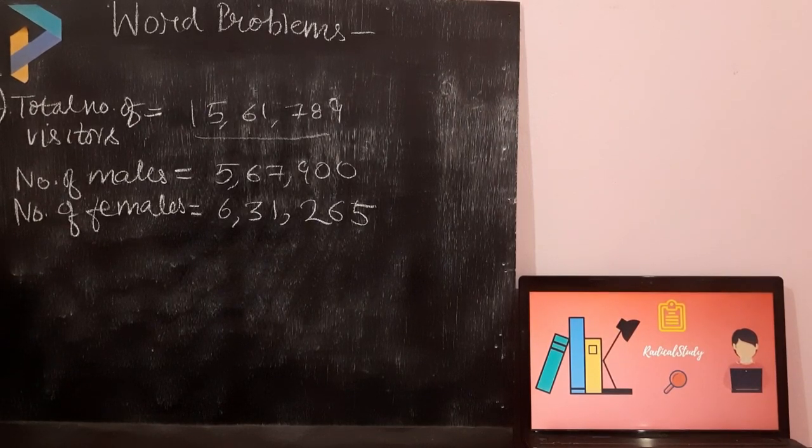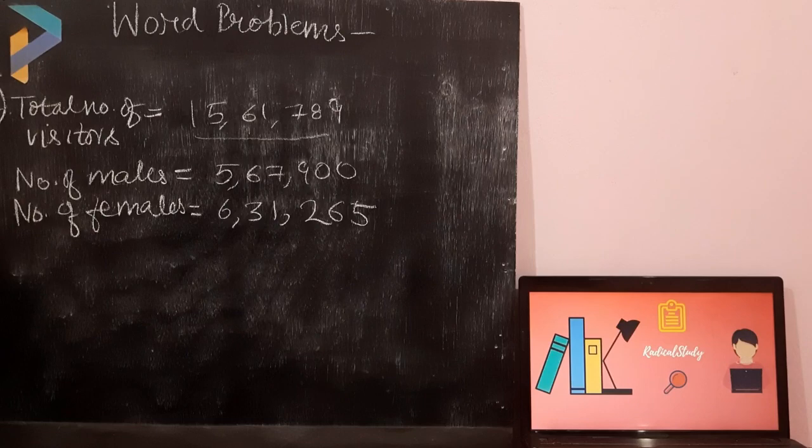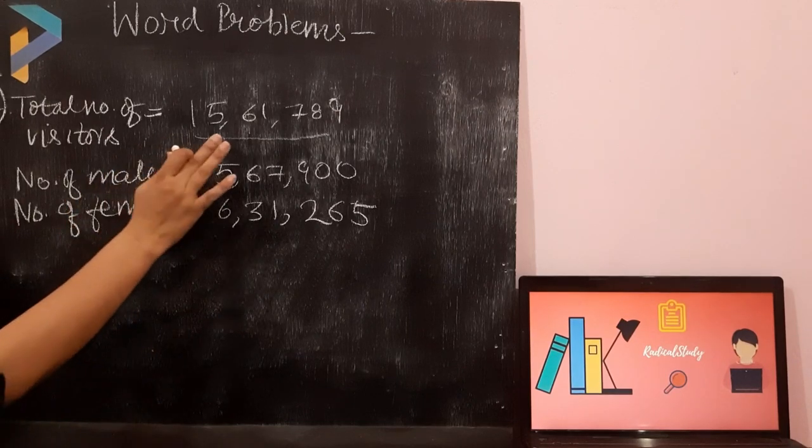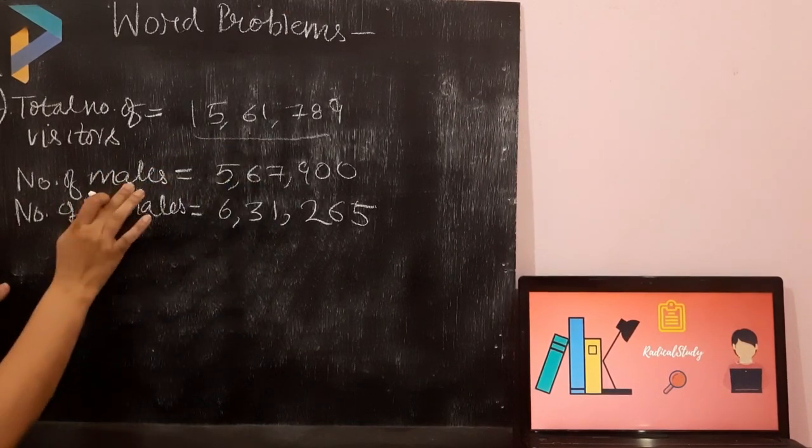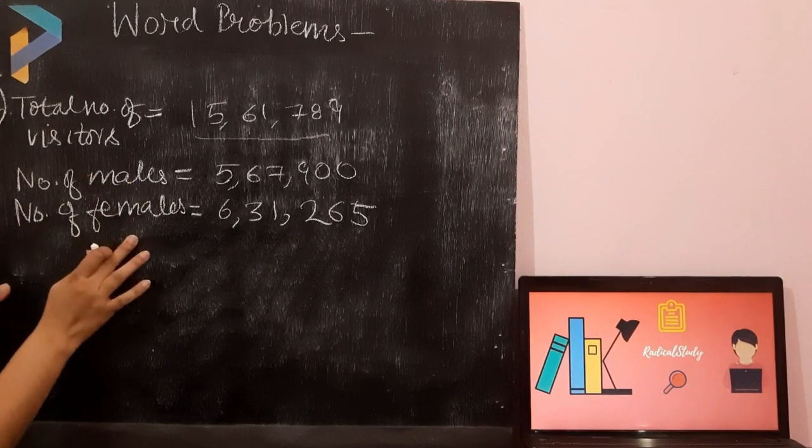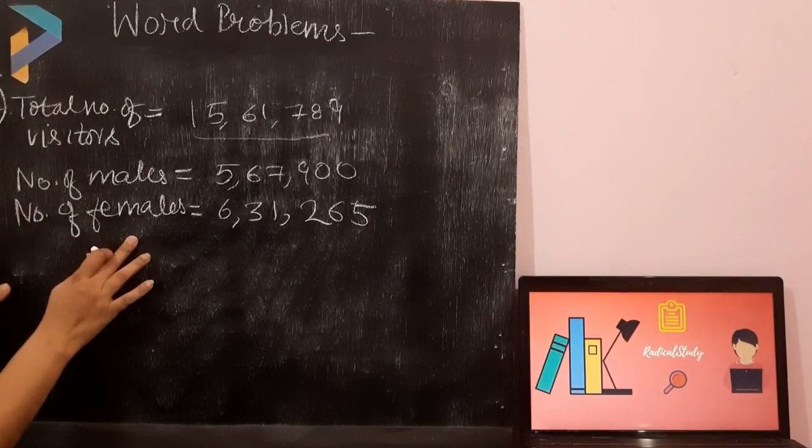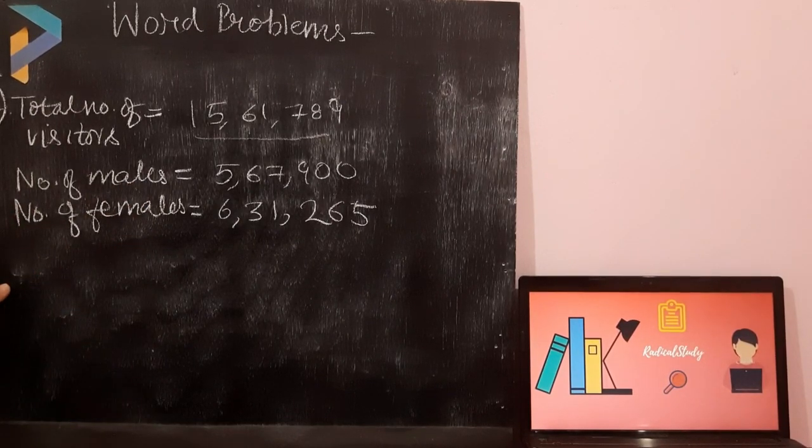Find out the total number of children who have attended or visited that event. Aapko yeh batana hai ki kitne baccho ne us event ko attend kiya. Total number of visitors is given to you. Number of males is given to you. Number of females is also given to you.